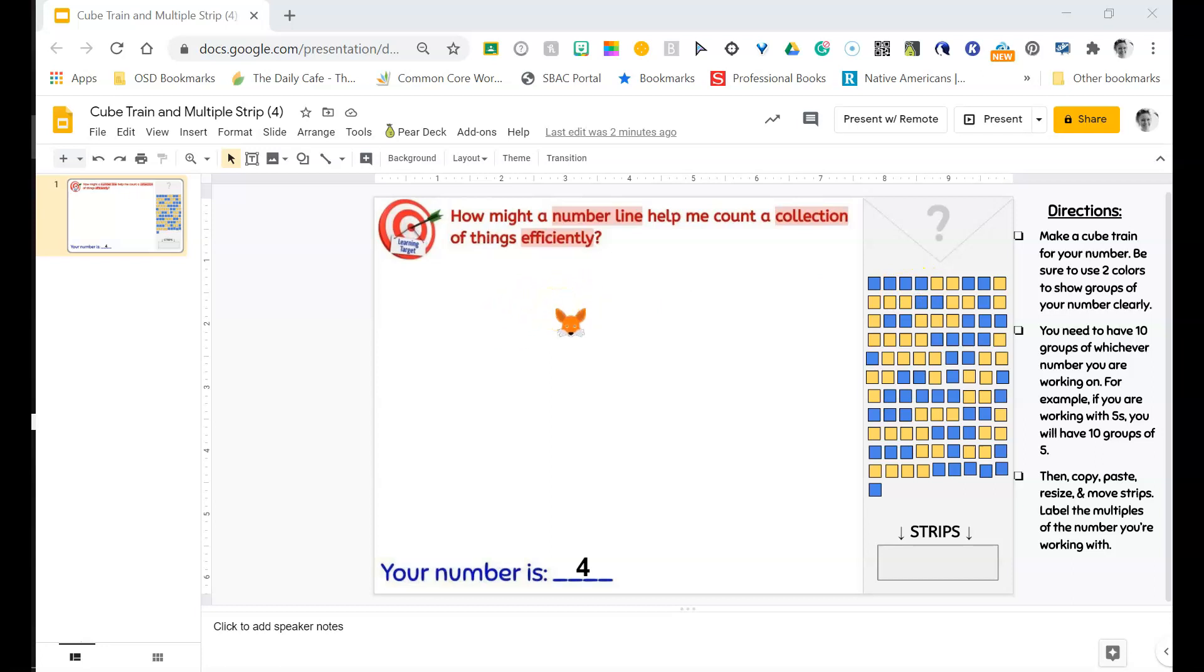We need to be sure that we use two colors to show the groups of our number clearly. Good thing we have blue squares and yellow squares. So we have two colors ready to go.